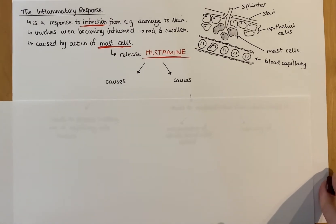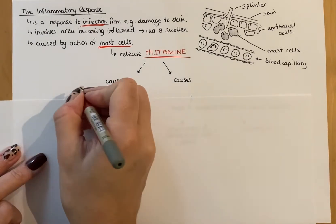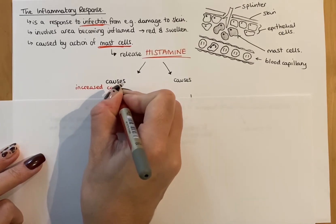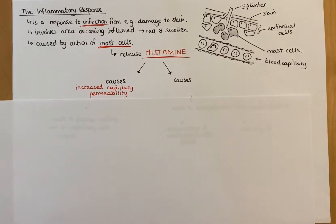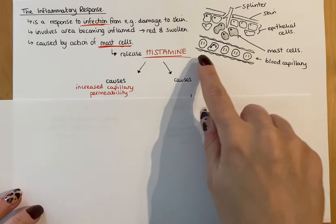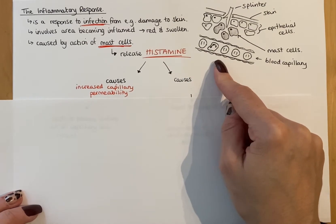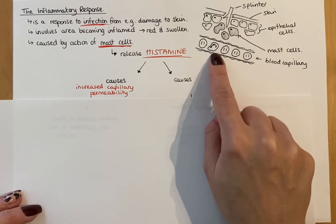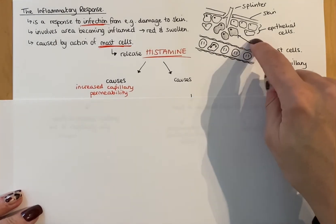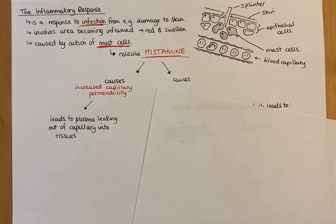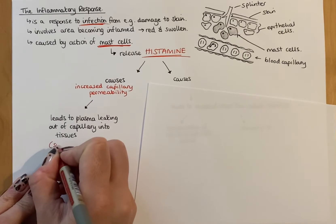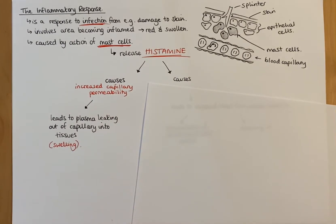Histamine causes two things. First, it causes increased capillary permeability. If the capillary walls are more permeable, more things move out through the capillary walls and into the tissues. If they're more permeable, that allows more plasma in the capillary to move out and into the surrounding tissues. Essentially, there's more liquid leaving the capillary, so that area becomes swollen - plasma leaks out of the capillaries into the tissues, causing swelling. That swelling actually serves a purpose: it localizes the area and protects it.